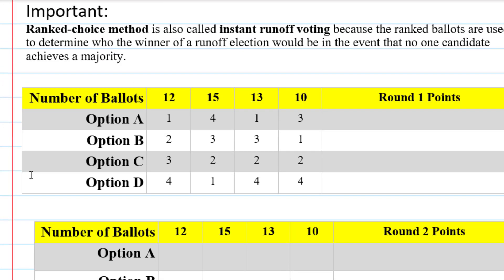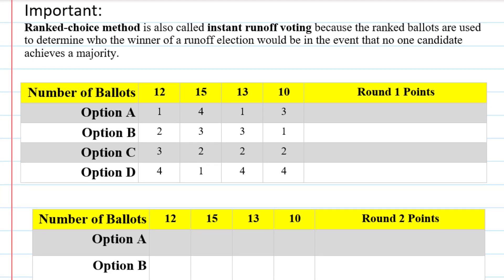It's important to remember that ranked choice method is also called instant runoff voting, because the ranked ballots are used to determine who the winner of a runoff election would be in the event that no one candidate achieves a majority — but you don't have to hold separate runoff elections. It's all done instantly thanks to each voter providing a complete ranking of all of the candidates.